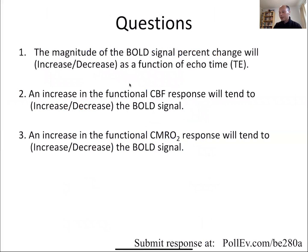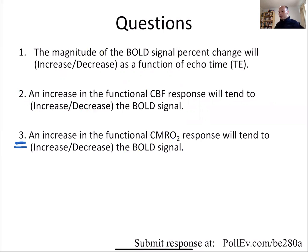Let's focus on this question. The question is: if there's a functional increase in metabolism, what will that tend to do to the BOLD signal? Assuming everything else is equal, we have an increase in the metabolic rate — will the MR signal go up or down?